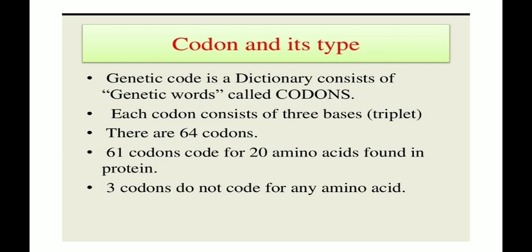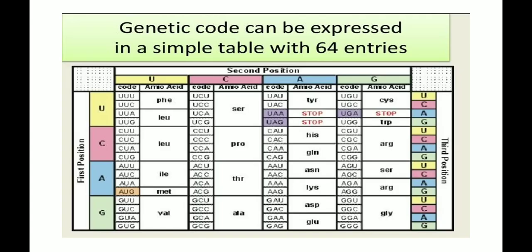The genetic code is a dictionary consisting of genetic words called codons. Each codon consists of 3 bases and there are 64 codons total. Of these, 61 codons code for the 20 amino acids found in proteins, but 3 codons do not code for any amino acid.